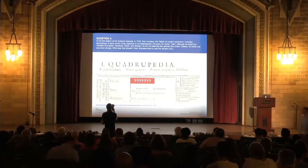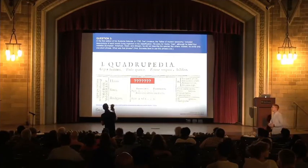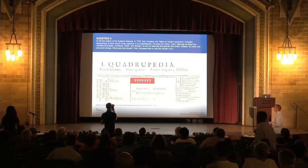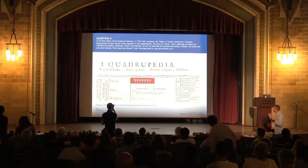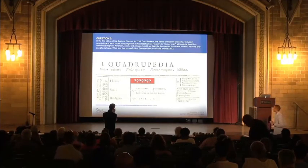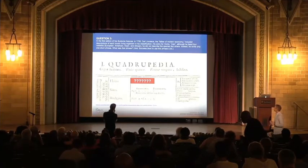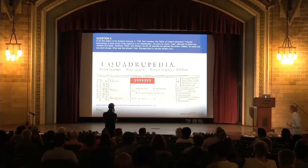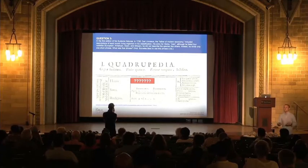In the first edition of his Systema Naturae — really the beginning of scientific classification — in 1735, Carl Linnaeus, the father of modern taxonomy, included descriptions of each known living organism in his classification. His entry for Homo, man, although he listed four varieties — the European, the Asian, the American, and the African — he did not describe this species like the others. Instead, he only wrote one short phrase. What was that phrase? As a hint for you philosophers, Socrates liked to use this phrase a lot — unlike descriptions of anatomy or physical features, he just said what?